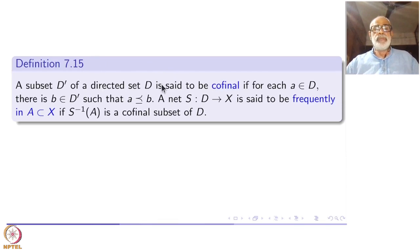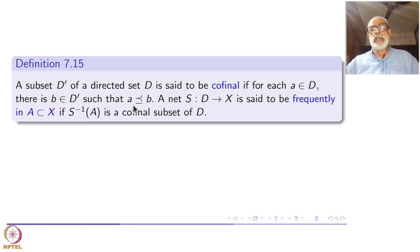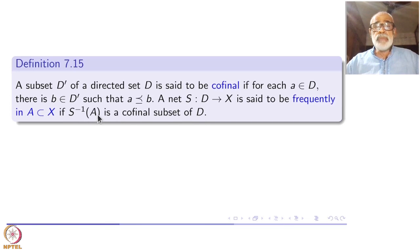Let us begin with the definition. A subset D prime of a directed set D is said to be co-final if for each A inside D you must have a B inside D prime such that this B follows A. That is, S inverse of A must be a co-final subset.